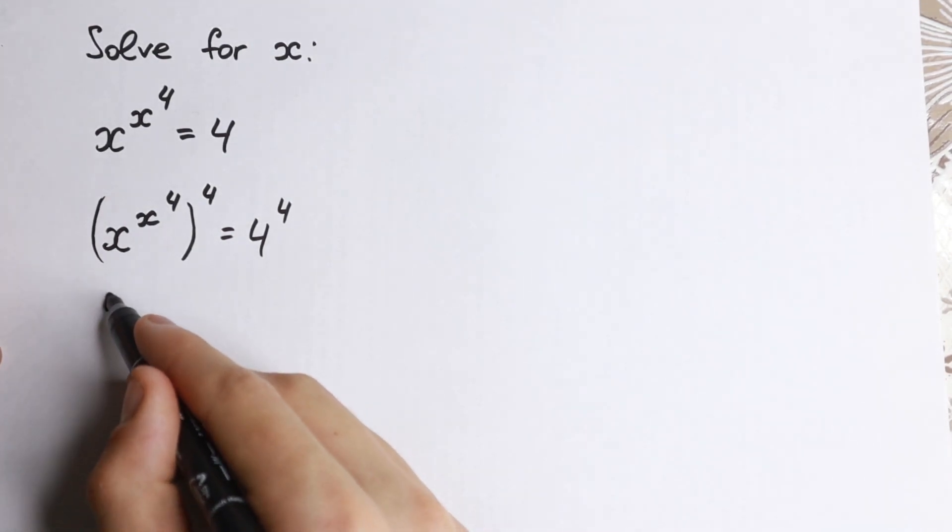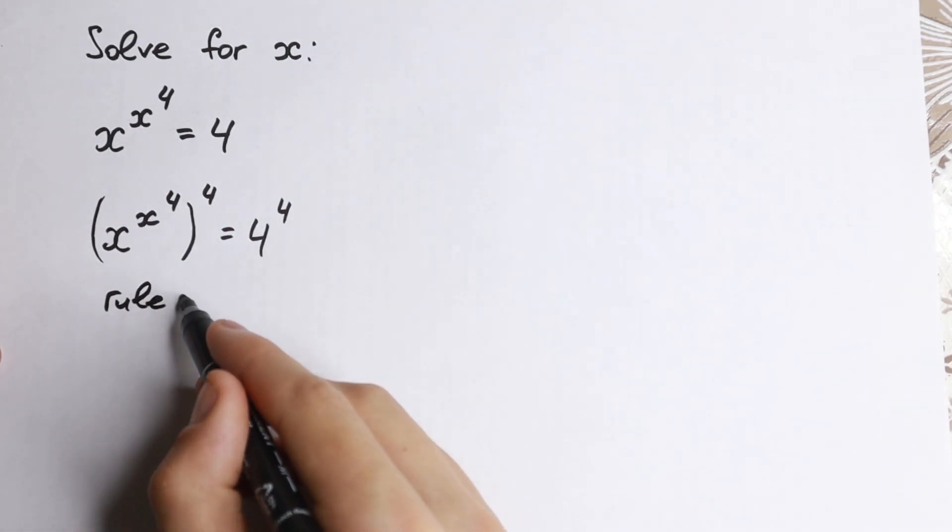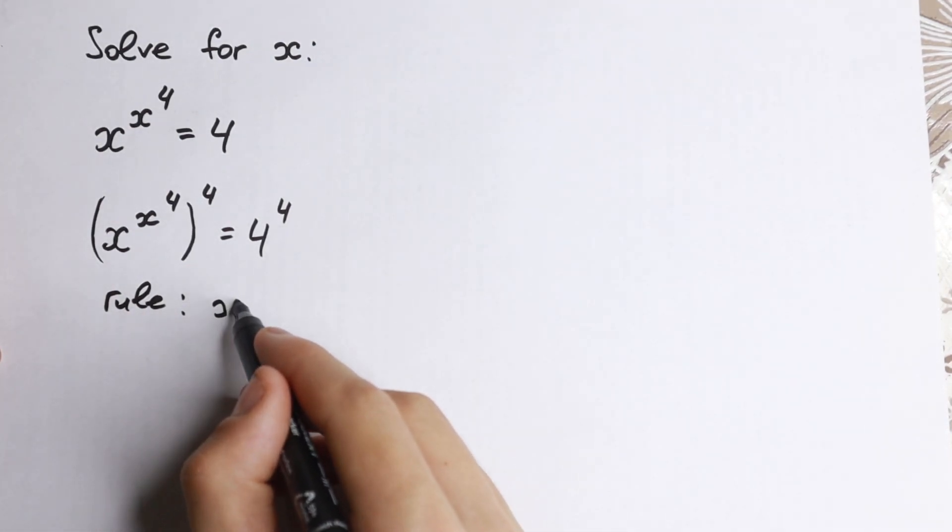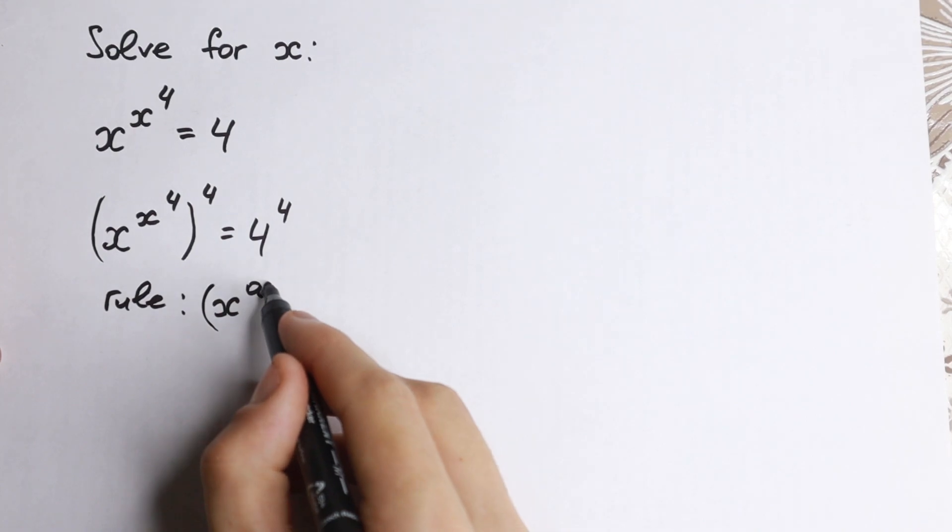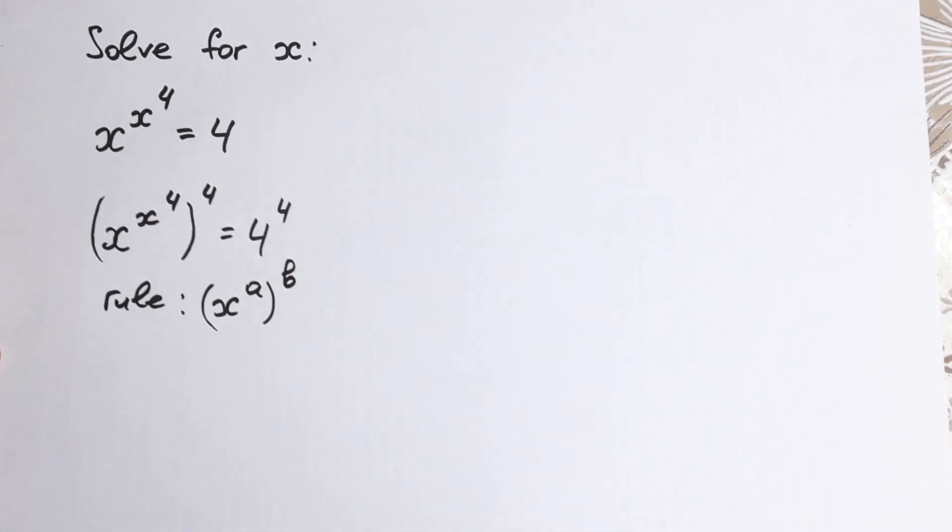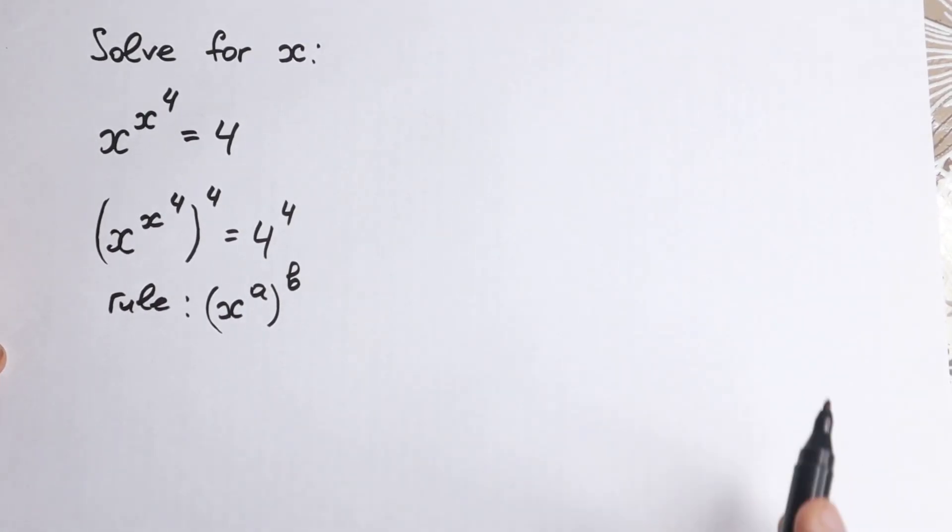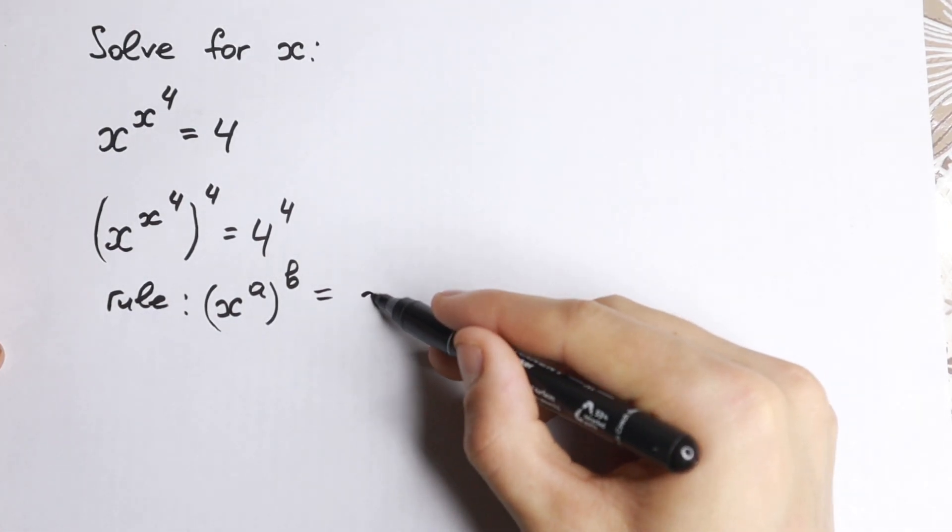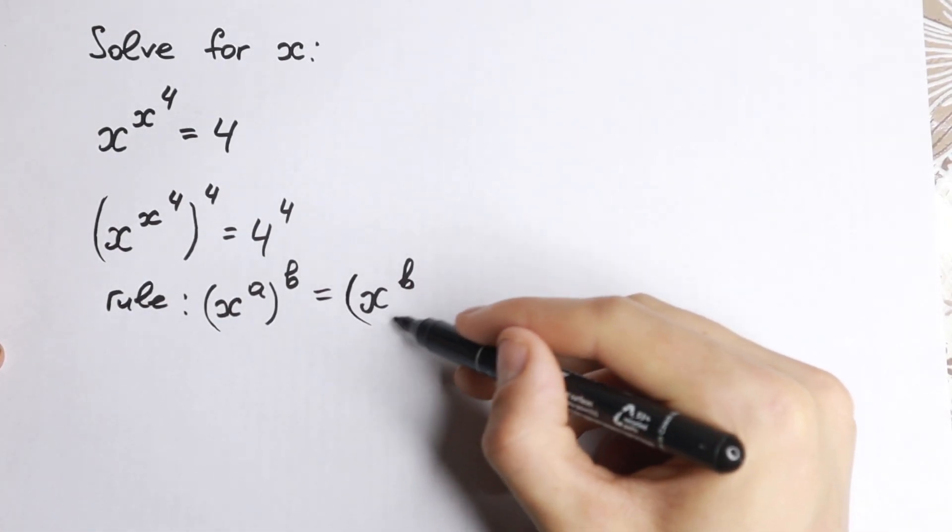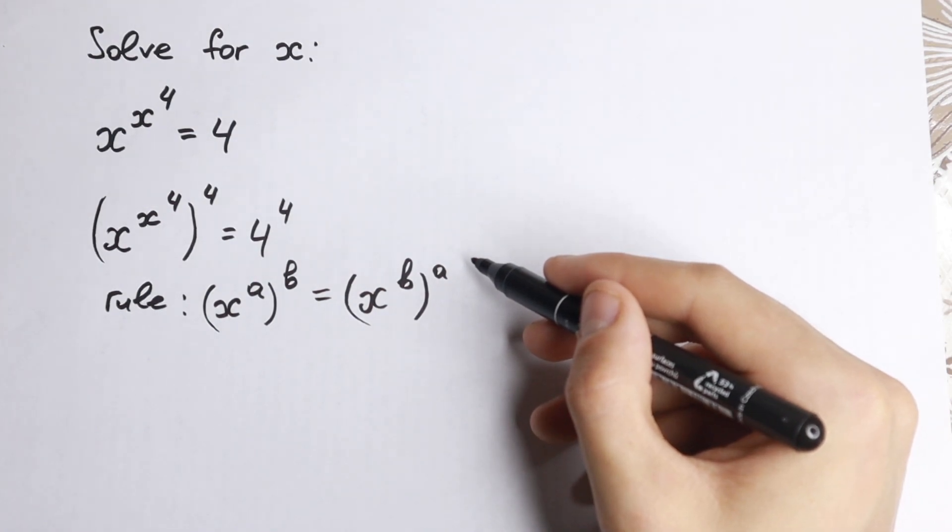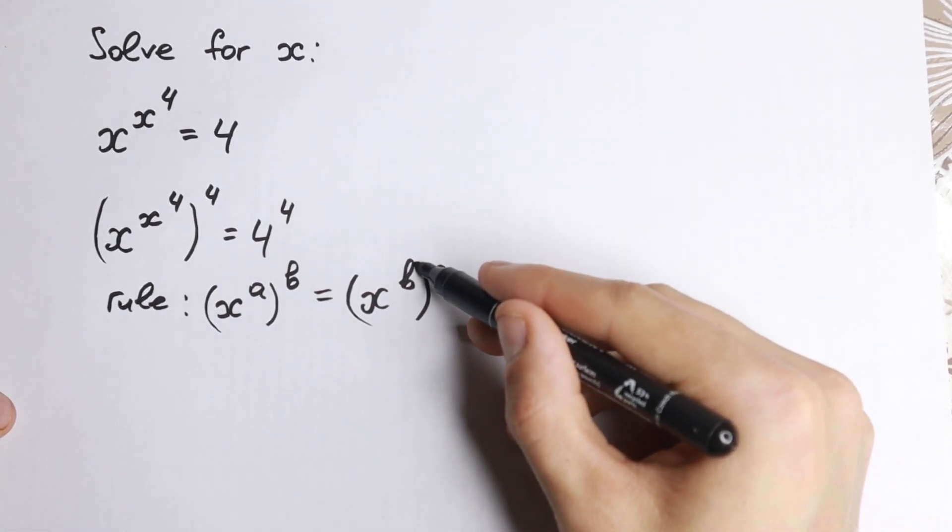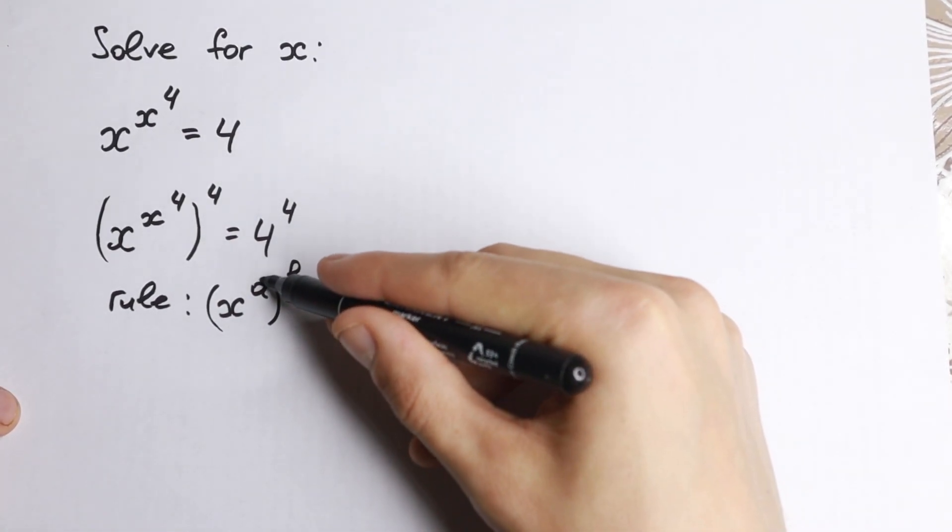And right now I want to write the main rule to solve this equation. If we have x to the power a raised to the power b, we can write it in a different way. We can write it as x to the power b raised to the power a. As you can see, we just change our powers. We can do this.